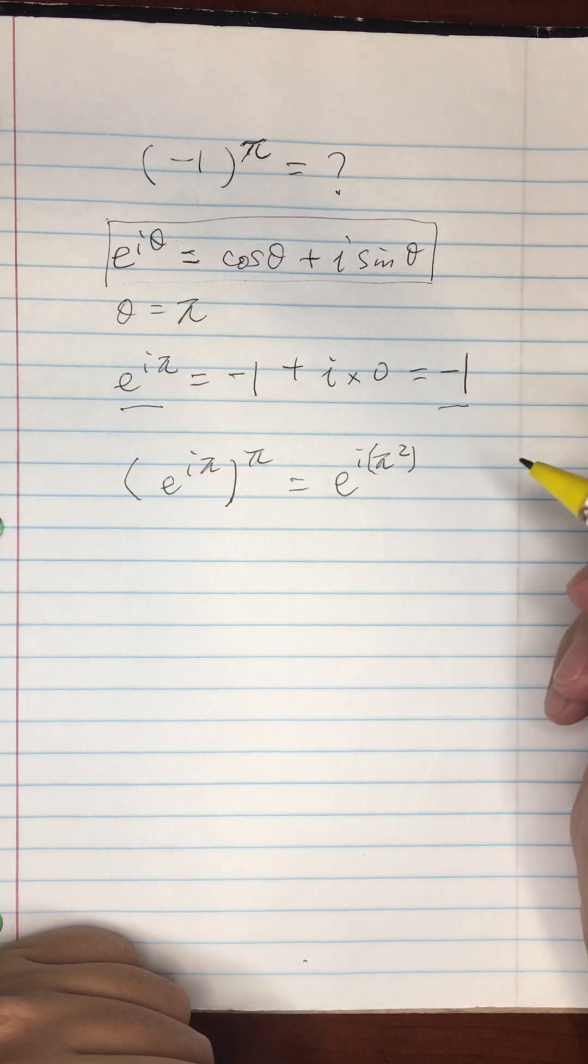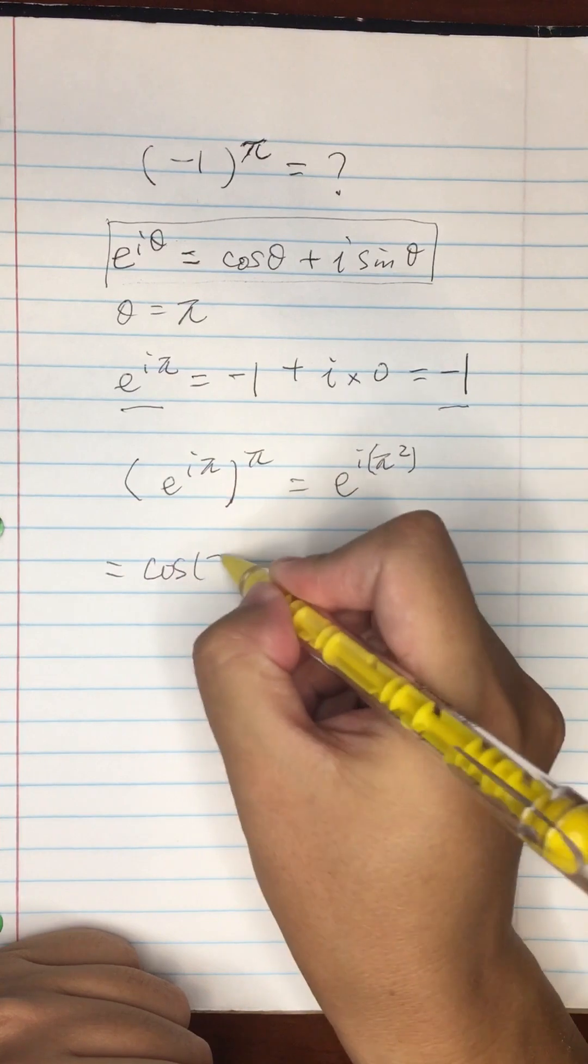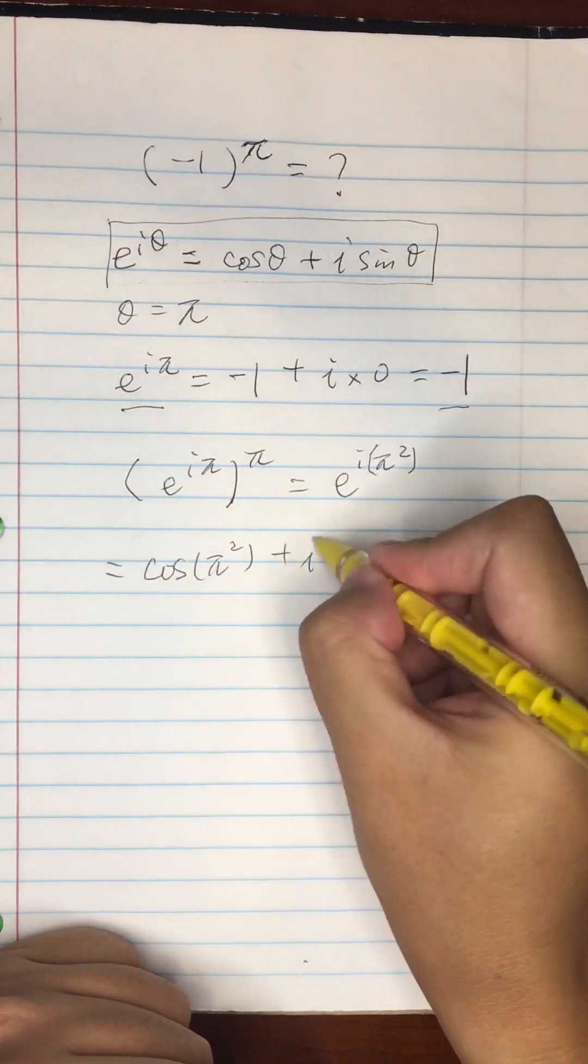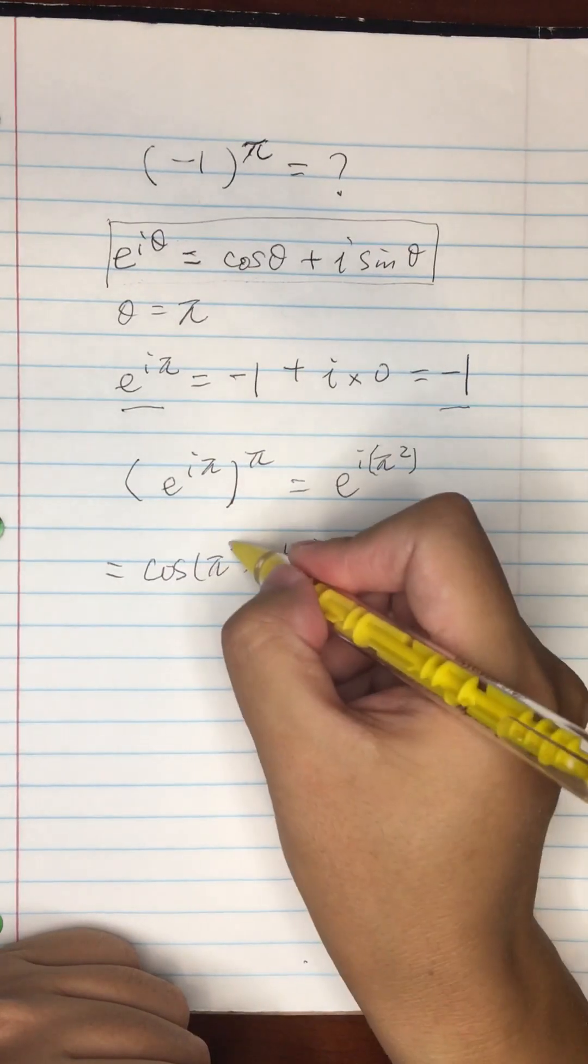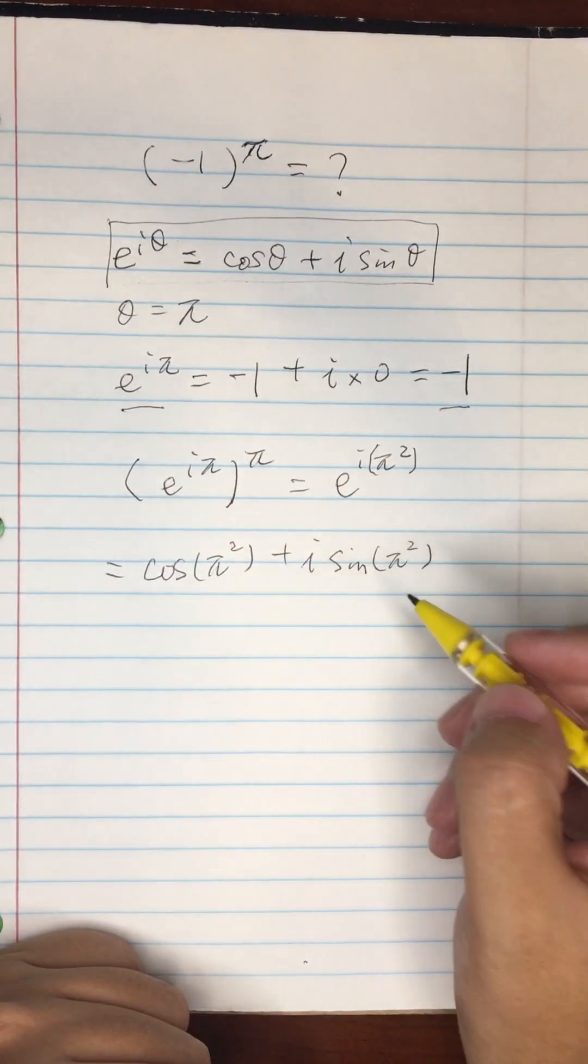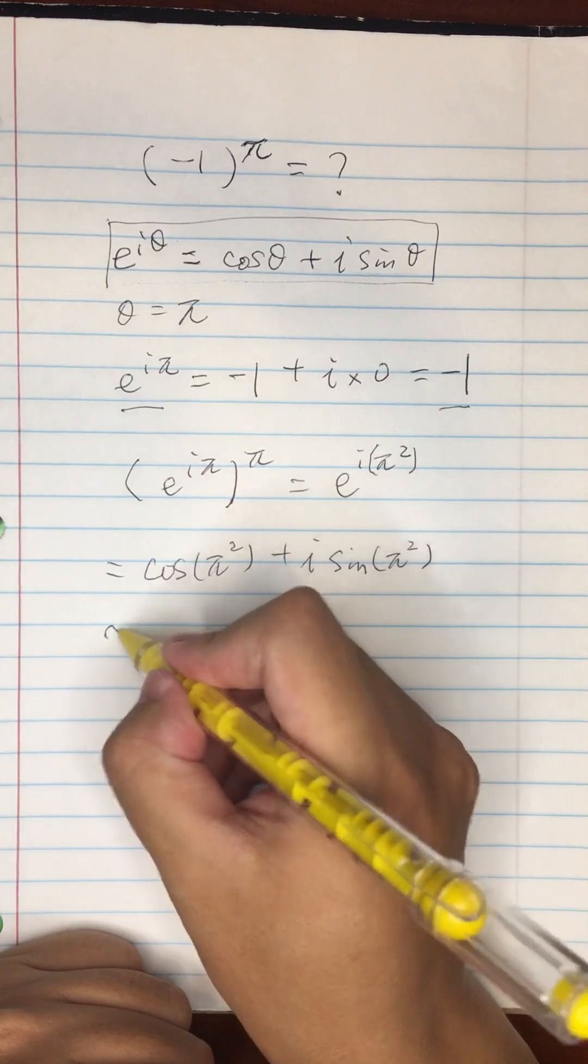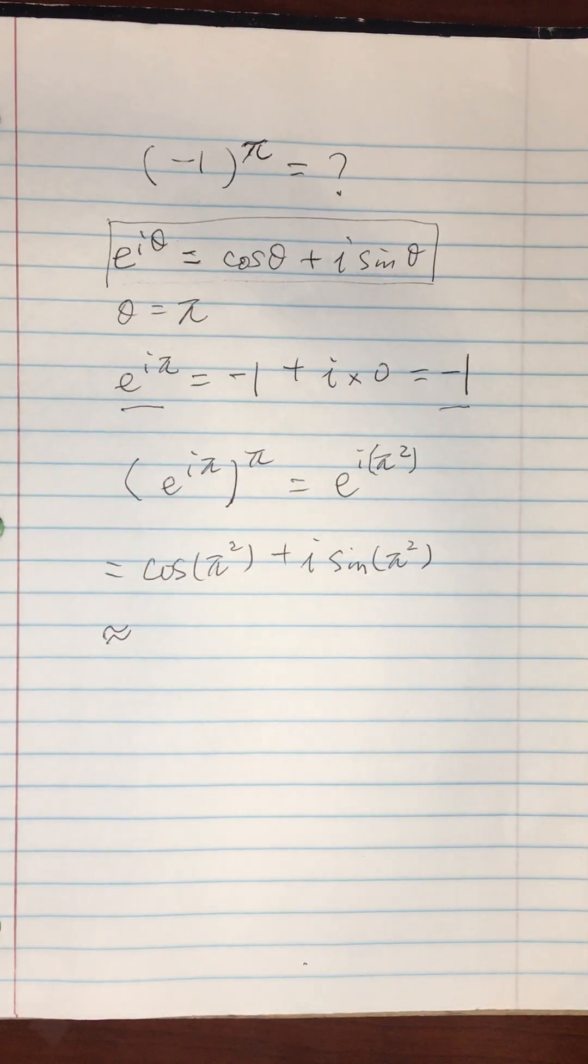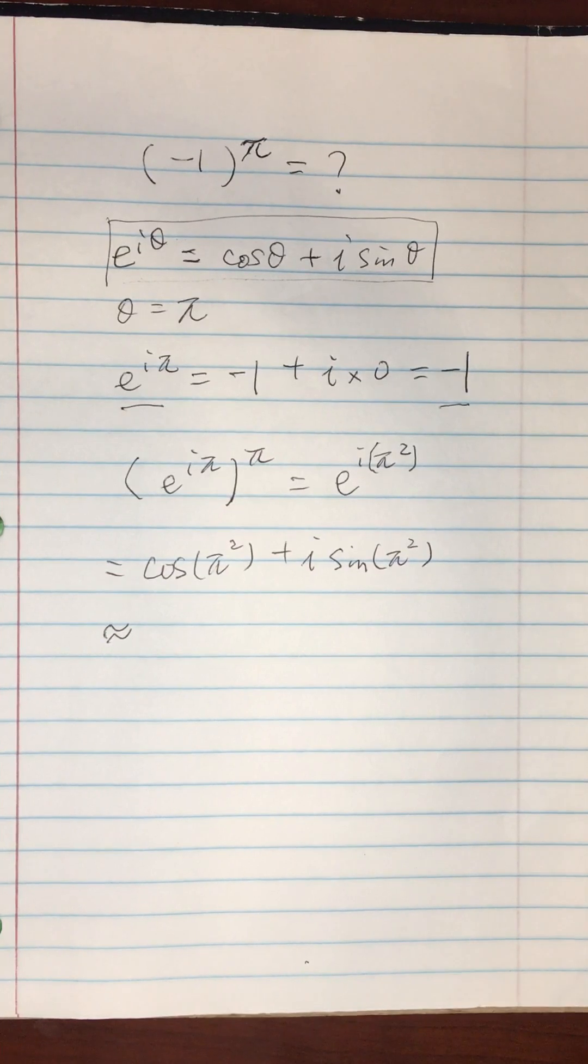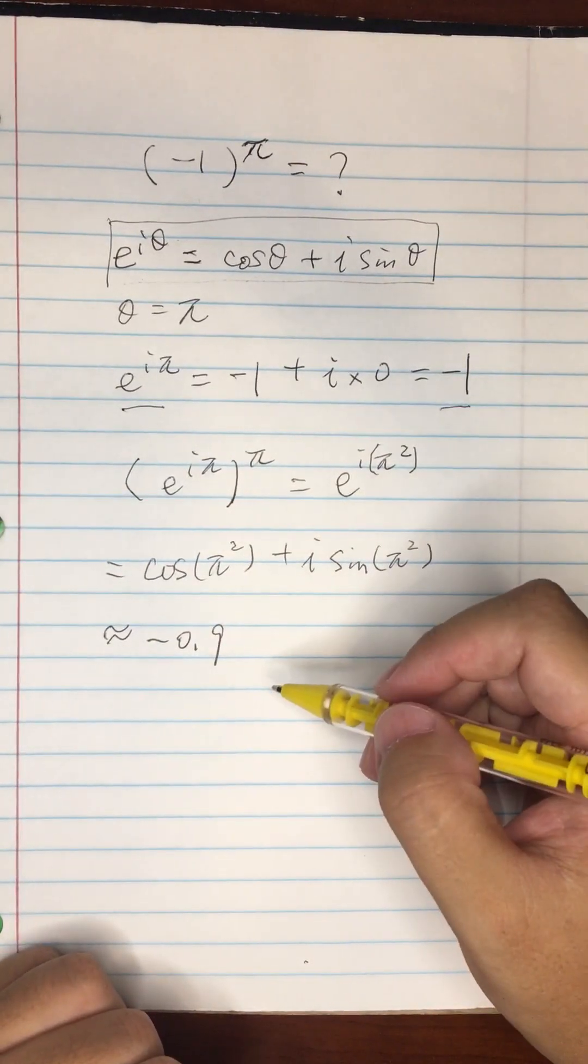So what does it equal to? It's going to equal to cosine pi squared plus i sine pi squared. At this point you have to use the calculator because there's no way to solve it by hand. Cosine pi squared is something that's kind of close to minus point nine.